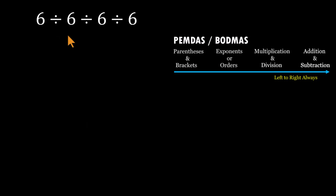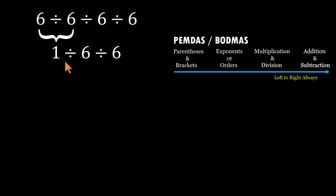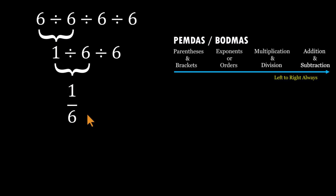So let's do it properly. Start at the far left. Six divided by six equals one. Now bring everything else down — we're left with one divided by six divided by six. Again, left to right: one divided by six can be written as one over six. Bring the last six down. Now we have one over six divided by six.